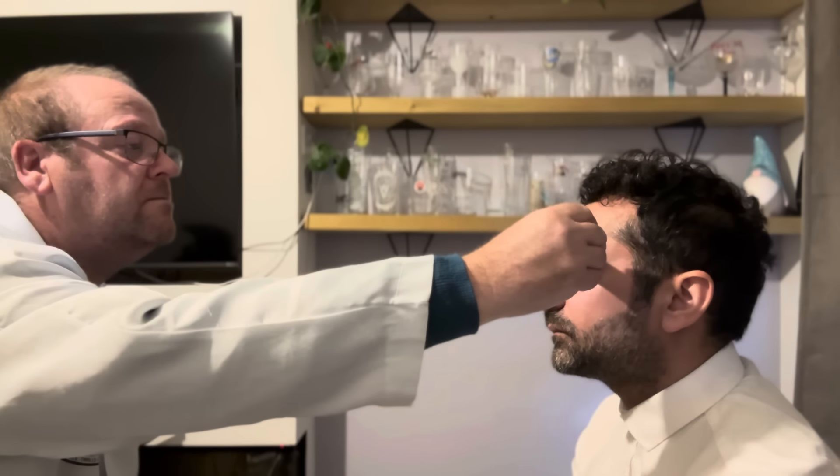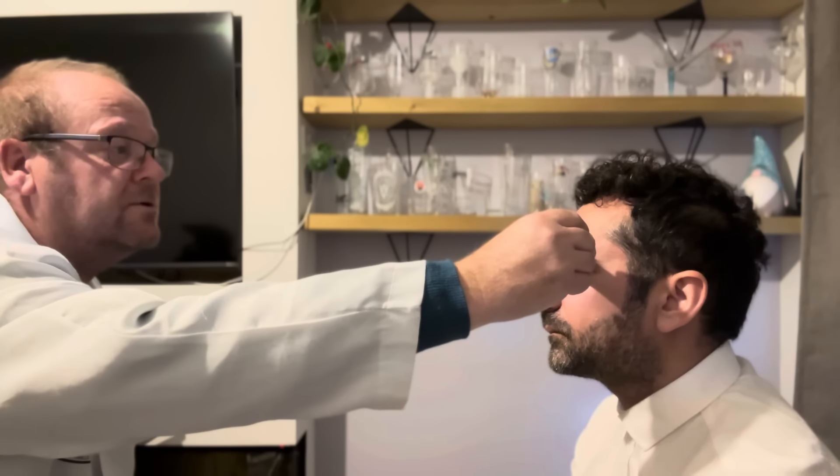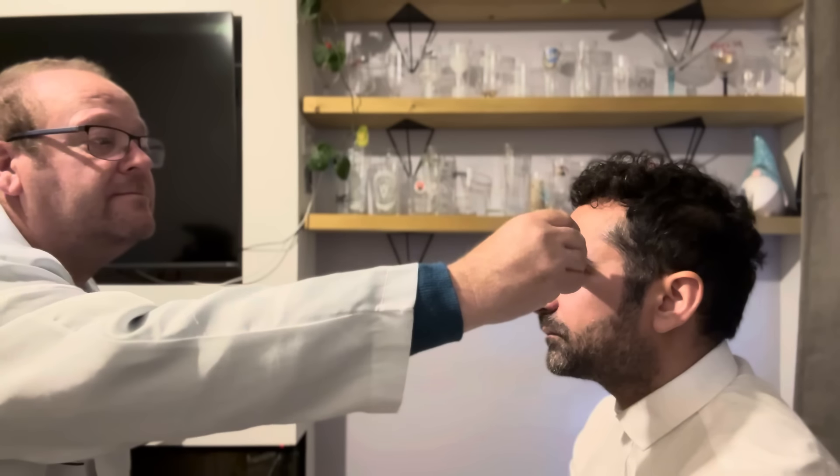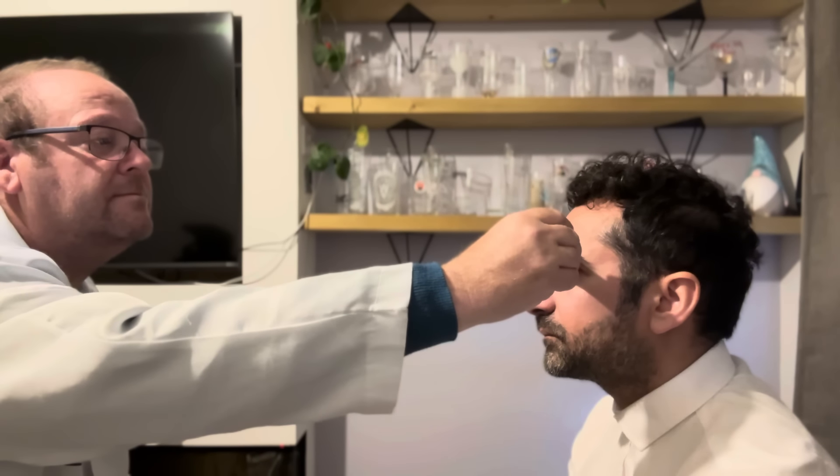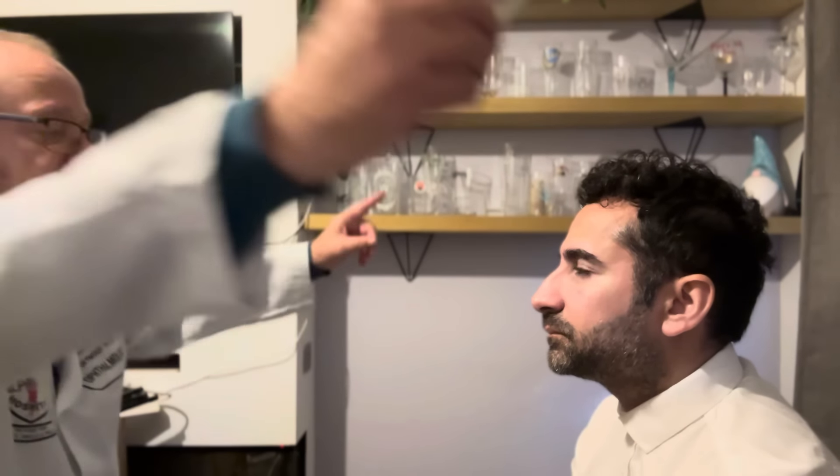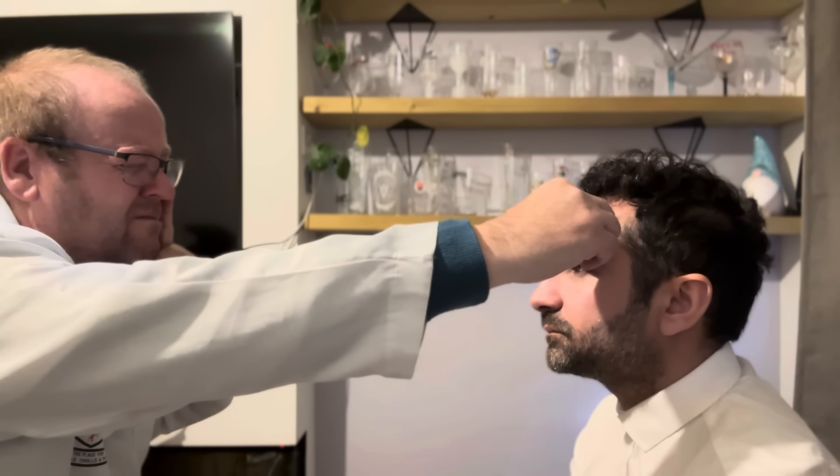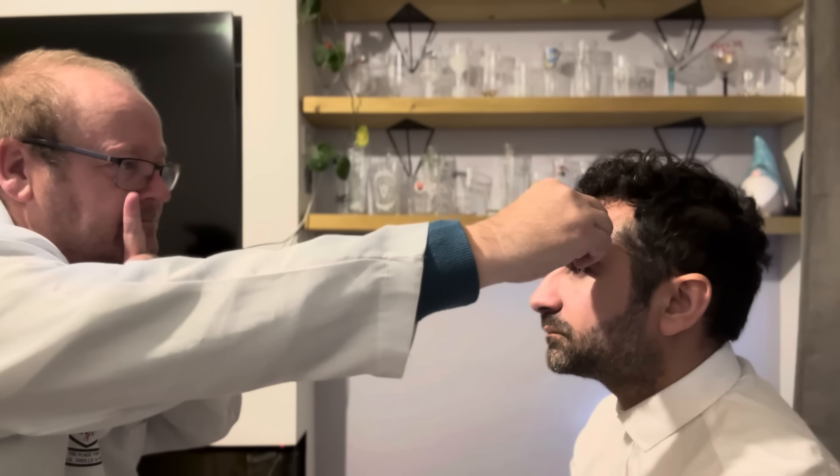Now I'm going to measure your pupil distance. To do this I'm going to do it first of all monocularly, so I'm going to use this for putting your nose onto and then I can measure across. Just look at me, look at my nose. 30 and 29.